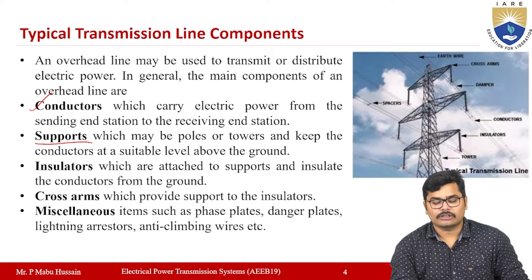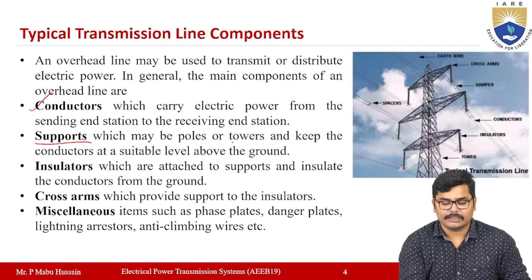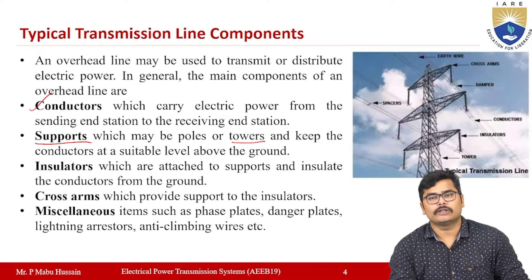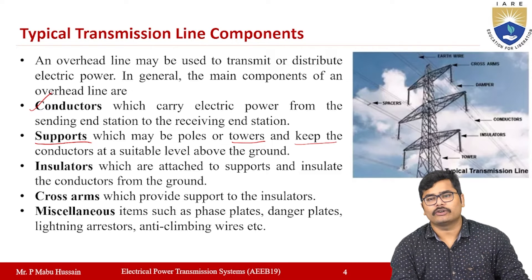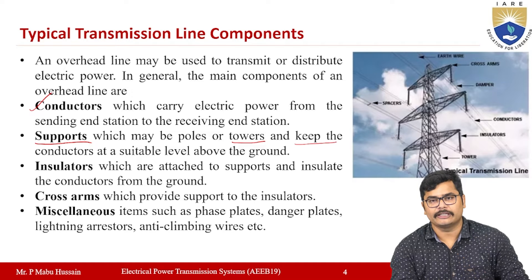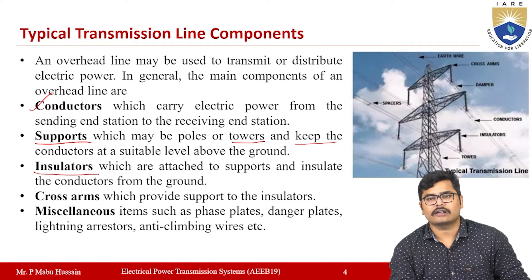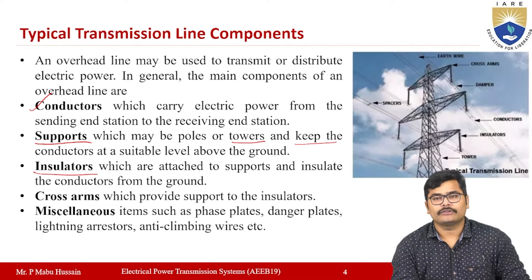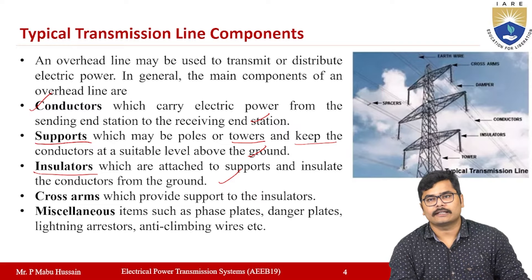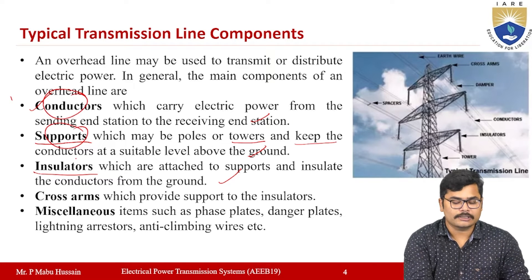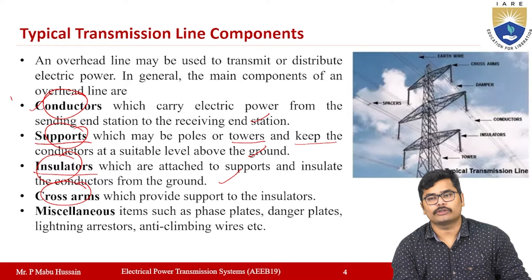The supports may be poles or towers. Poles are used for low voltage levels and towers for high voltage levels; they keep the conductors at a suitable height from the ground with proper ground clearance. Insulators are attached to the supports and insulate the conductors from the ground. The main components are conductors, supports, insulators, and cross arms.